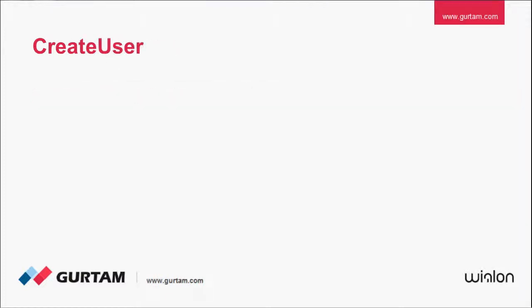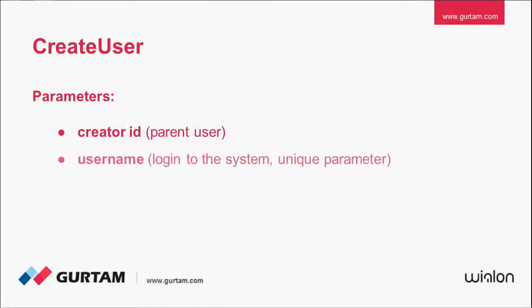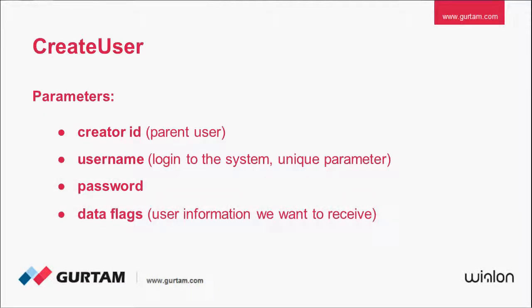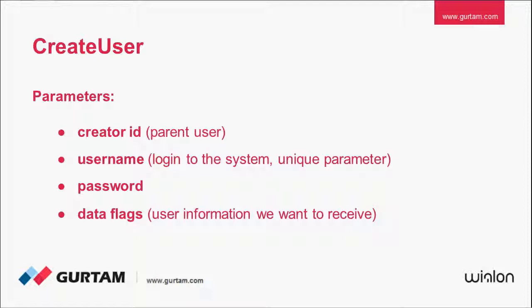Example number 1 — creating a user. Let us look at the createUser request. It has 4 parameters: creator ID, username, password, and data flags. Creator ID is the ID of the user who will create a new user — our new user will be a child user, and in most cases we'll use the current user ID. The newly created username is the name entered as a login to the system; username is unique for each Wialon server, so if the name is taken, you will receive an error response. Parameter password is the new user's password which the user needs to log in to Wialon. The data flag parameter shows which information about the new user we want to receive after the user is created. You will find more information on creating a user in the createUser section of SDK documentation.